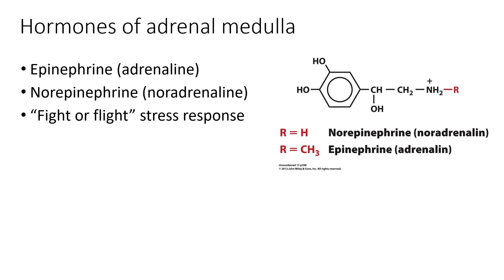The hormones from the adrenal medulla are the catecholamines: epinephrine and norepinephrine. These have very similar structures — the main difference is that epinephrine has a methyl group where norepinephrine does not. As a result, they have very similar roles because they are so similar structurally.